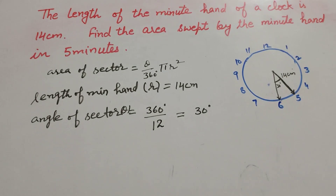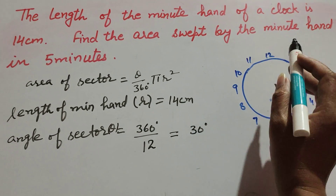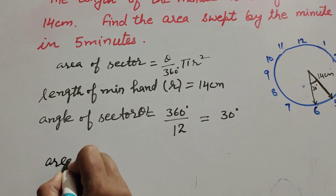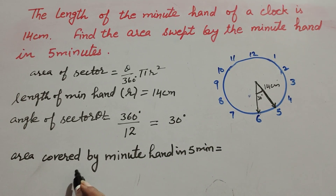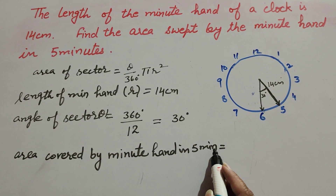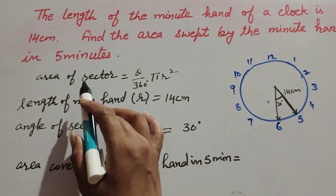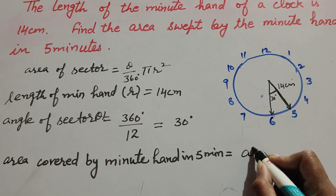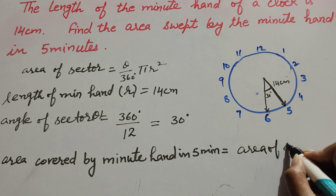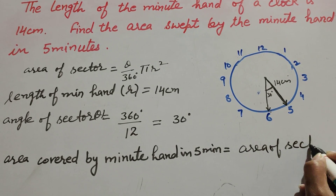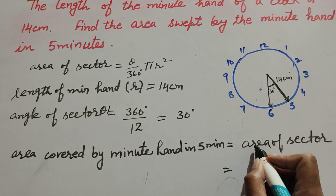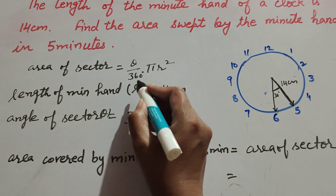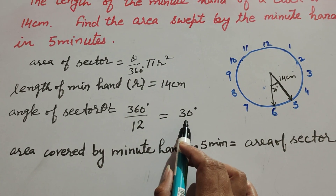Now we find the area swept by the minute hand in five minutes. The area covered by the minute hand in five minutes equals the area of the sector. The area of the sector is equal to theta over 360 degrees, where theta equals 30 degrees, so it is 30 over 360.